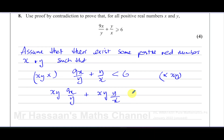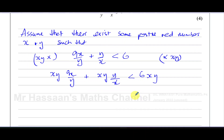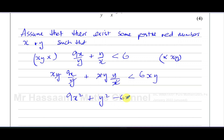After multiplying, the y's cancel out in the first term and the x's cancel out in the second term. We're left with 9x² + y² - 6xy, and that is less than zero.